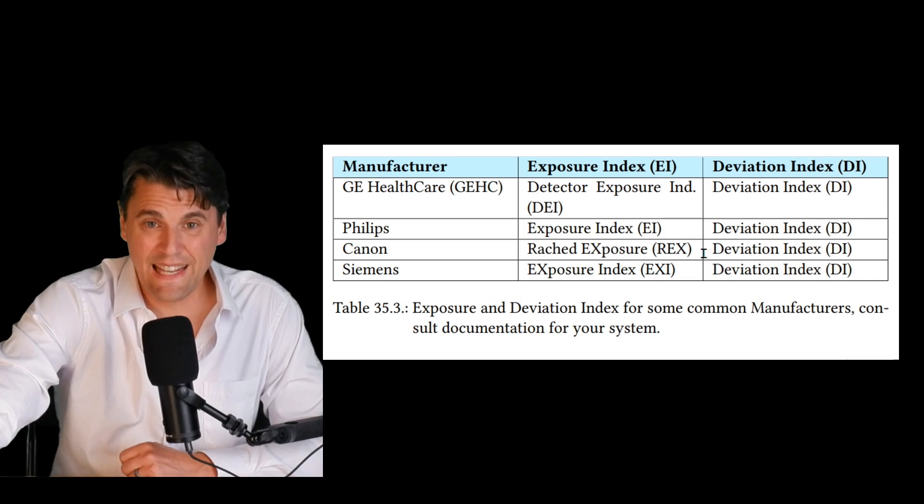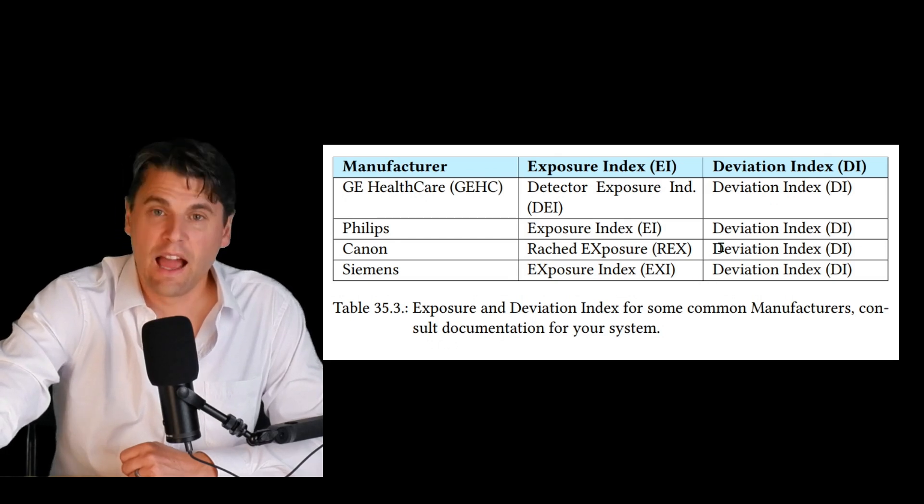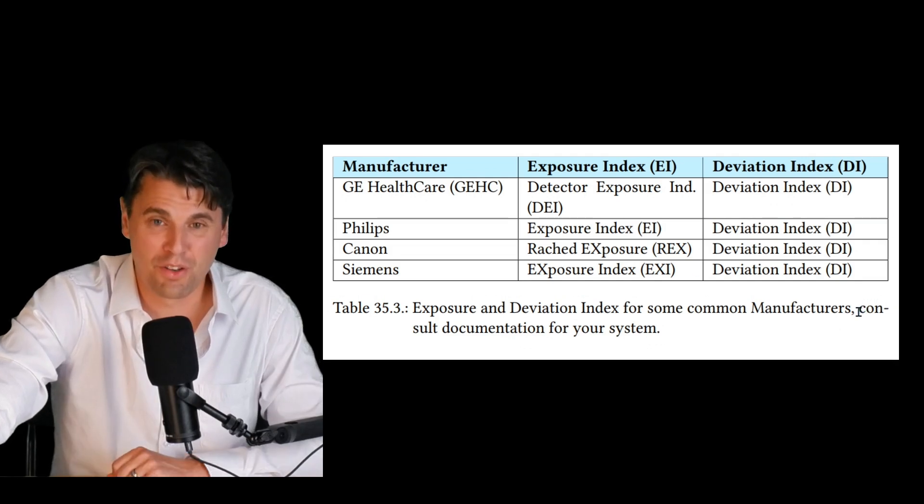Canon uses reached exposure index or REX. Siemens uses exposure index or EXI. And then luckily on the deviation index, all the vendors have used the same DI or deviation index in order to denote the deviation index. On your UI, these are the values you're going to be looking for, for the different vendors.